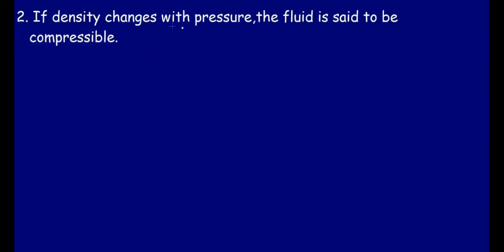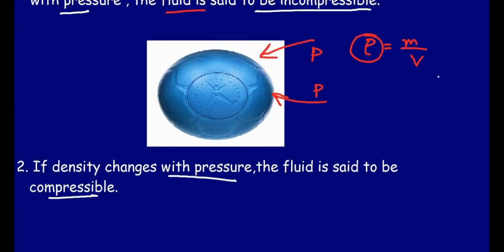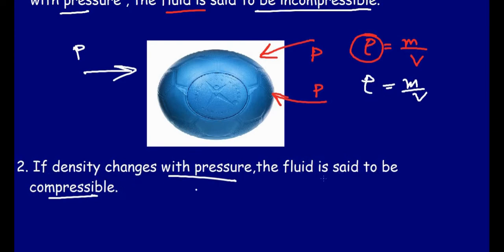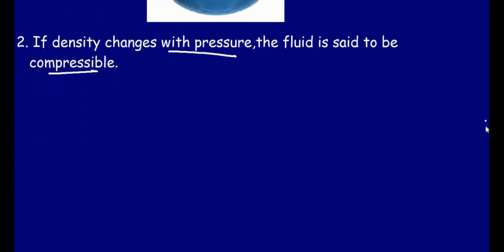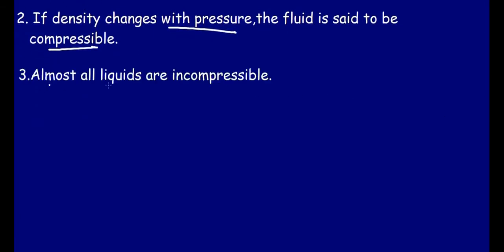If density changes with pressure, the fluid is said to be compressible. If pressure applied causes the ball's volume to shrink, the density (mass/volume) will change, meaning density is affected by pressure and the fluid is compressible. The third point is that almost all liquids are incompressible, and gases are compressible.